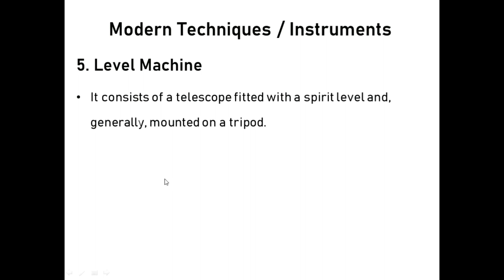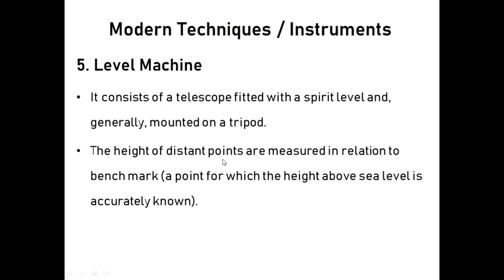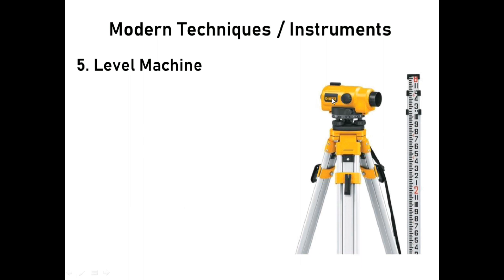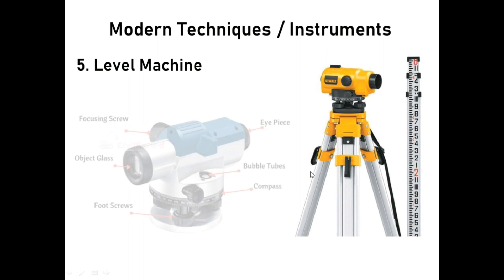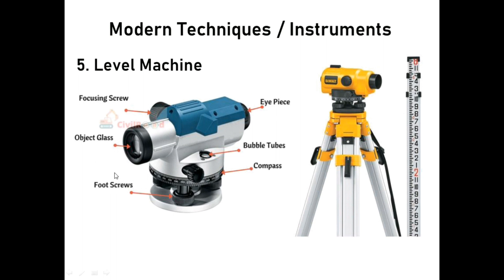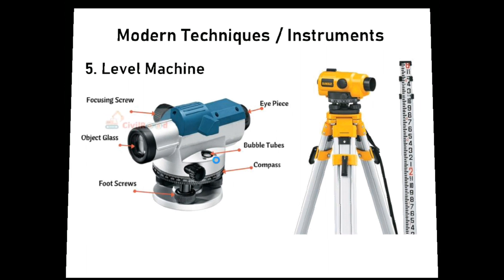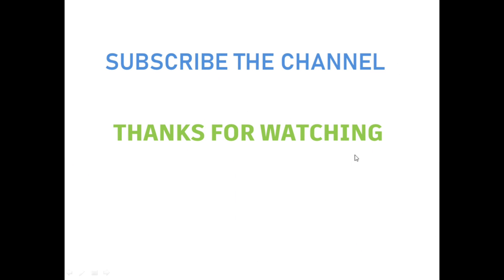The height of distant points are measured in relation to benchmark. What is benchmark? A point for which the height above sea level is accurately known. You can see the picture of level machine and the components of level machine. Subscribe to the channel and thanks for watching video.